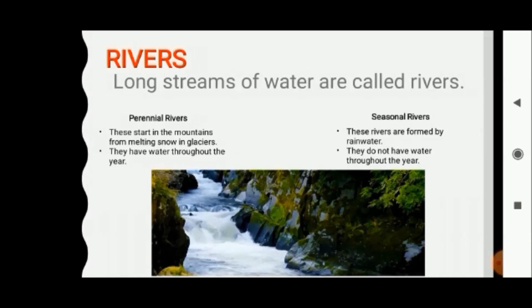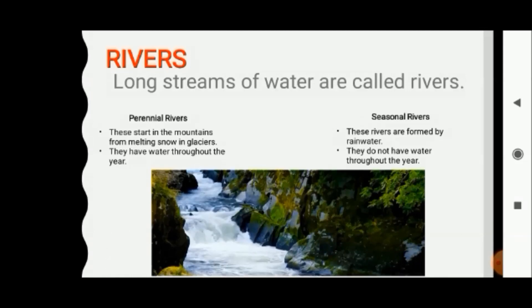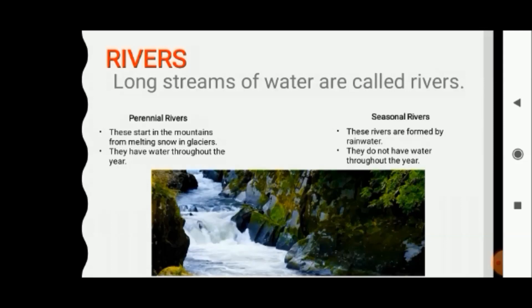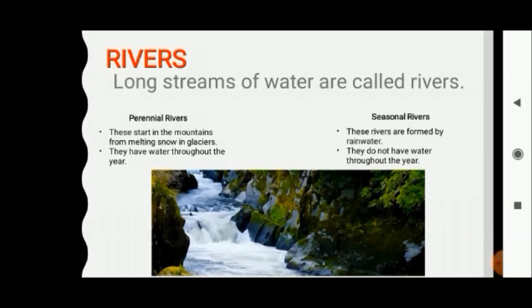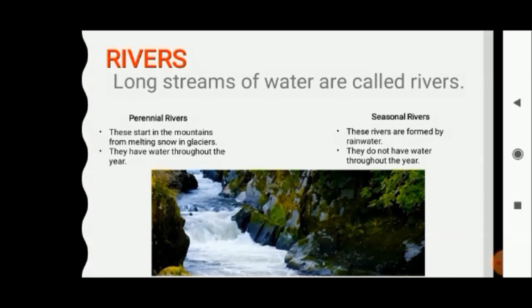But few rivers are formed by rainwater and they do not have water throughout the year — their water dries up. These rivers are known as seasonal rivers, and most of the rivers in South India are seasonal rivers. Rivers ultimately flow into the sea.